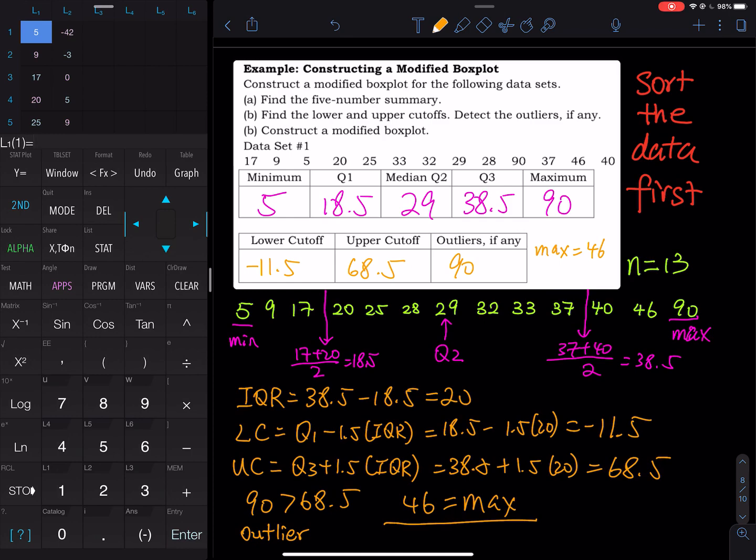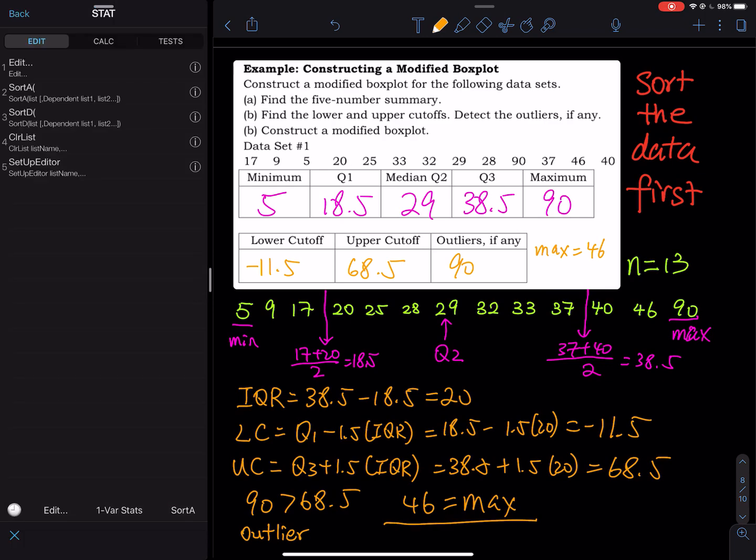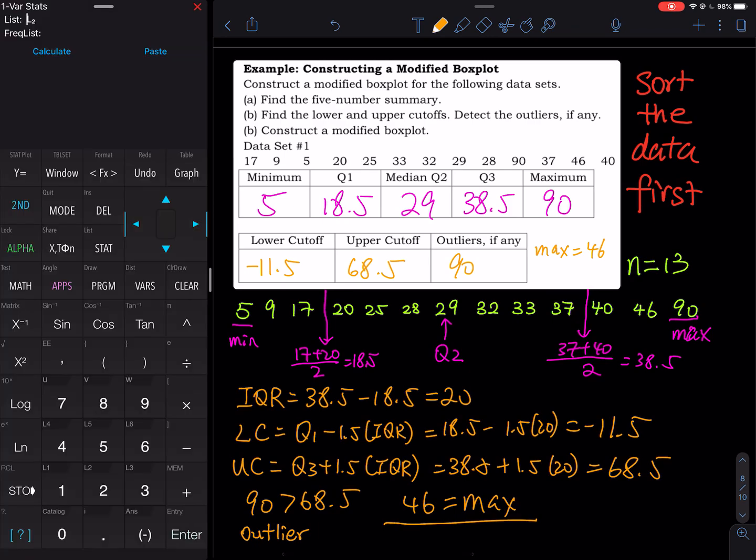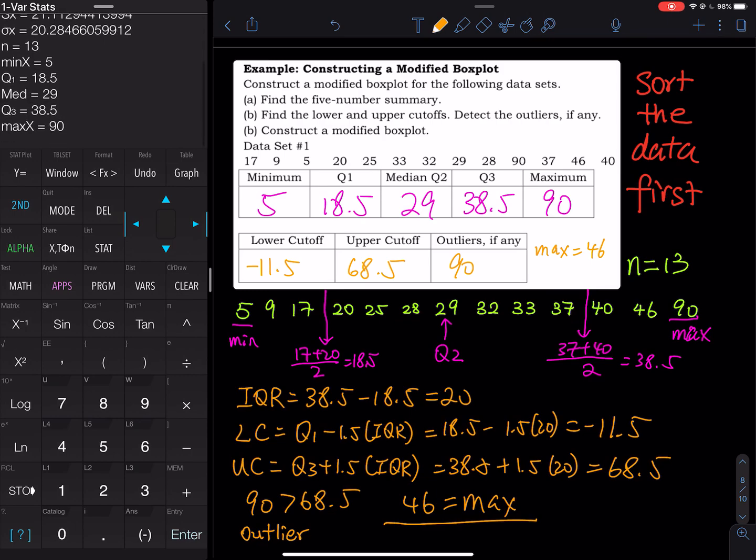And then we have to calculate the five number summary. So we go to second mode to quit, and then we go to STAT. And then we go to CALC, and then we do a one variable stats. So I put my data in L1. I will just hit second 1, so that is L1. And then I calculate, or for the older calculator, you hit second 1 on the home screen, and then you press enter. So you calculate, you see your five number summary. So 5, 18.5, 29, 38.5, and 90. So that is the five number summary.